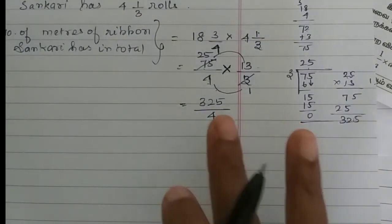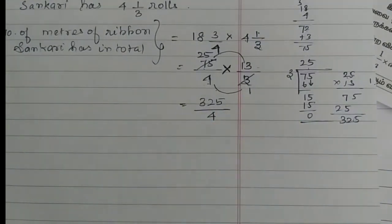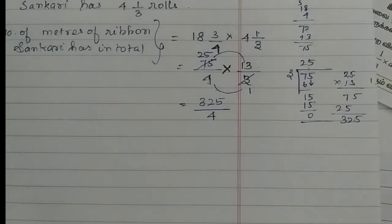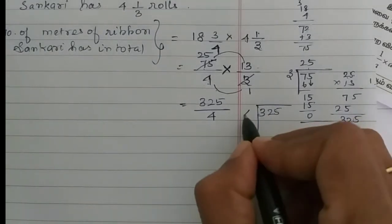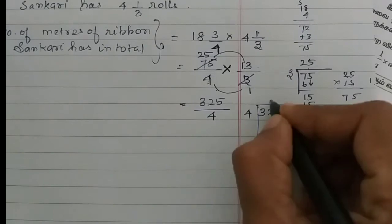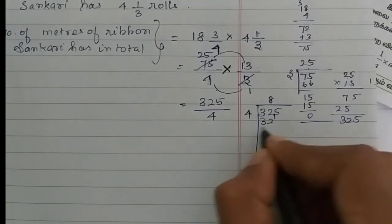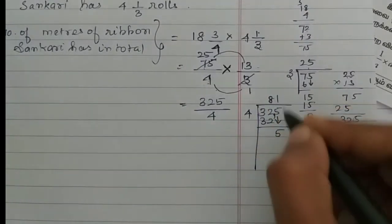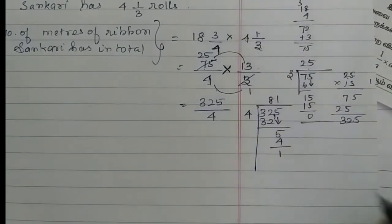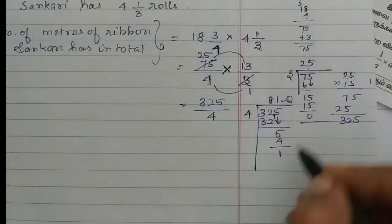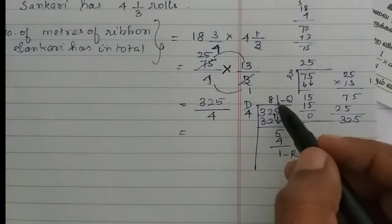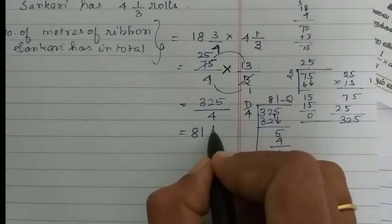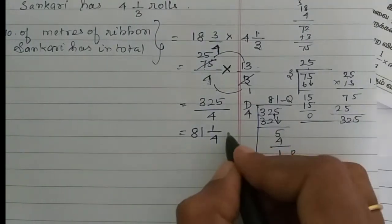325 are 4 divided by mixed fraction around mixed fraction. So 325, 4 all divide, 4 8 is 32. Then 5 is on the row, then 4 1s are 4, balance 1 in the row. So either quotient, either remainder, either divisor. So quotient remainder by divisor is mixed fraction. So 81, then 1 by divisor is 4 meters.